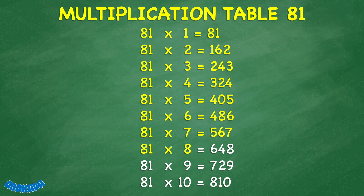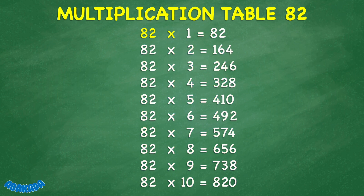81 times 8 equals 648. 81 times 9 equals 729. 81 times 10 equals 810. 82 times 1 equals 82. 82 times 2 equals 164. 82 times 3 equals 246. 82 times 4 equals 328. 82 times 5 equals 410.